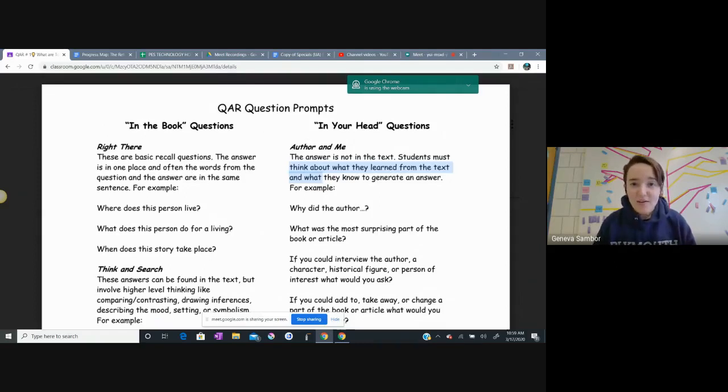In an answer that you give me, I'm looking for, here's the type of question, okay? That's part one. This is a right there question, or this is a think and search question. And the second thing I'm looking for in your answer is, here is what I think. Here is my answer. So two parts to that question.